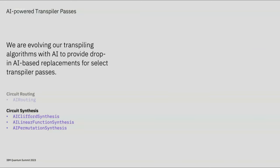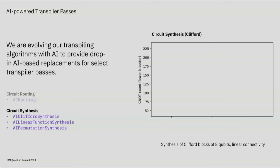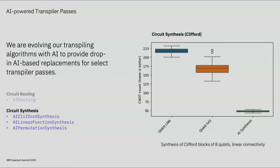Now, let's take a look at the AI circuit synthesis. This is a benchmark run on synthesizing random Clifford blocks of 8 qubits with linear connectivity. Qiskit Clifford synthesis already generates a good circuit. Qiskit level 3 improves this a bit, but can we do better? This is our level 1 to 3 AI synthesis — around 70% better in gate count, and this just took one second per block.